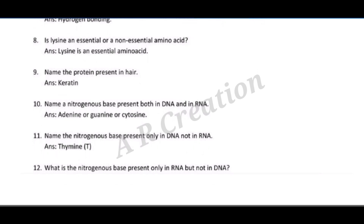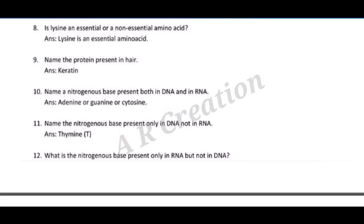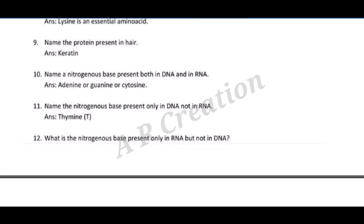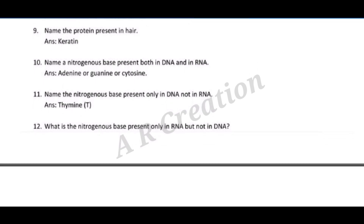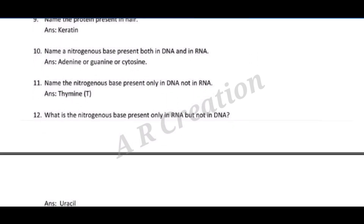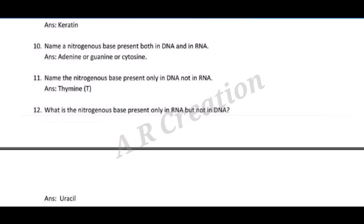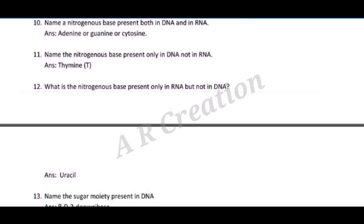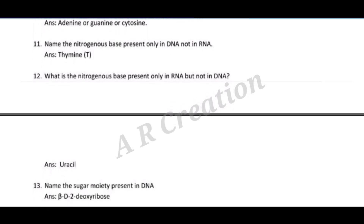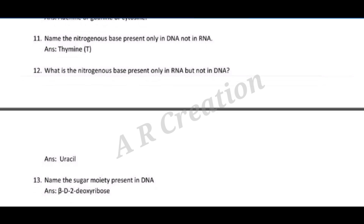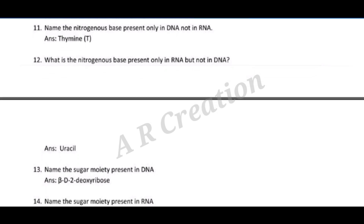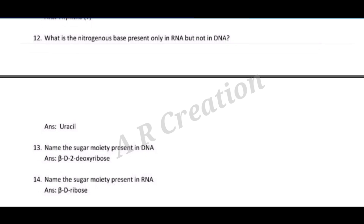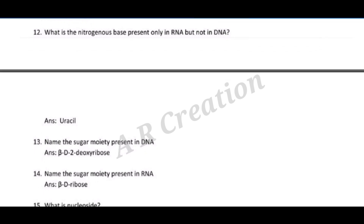Question nine: name the protein present in hair. Answer: keratin. Question ten: name a nitrogenous base present both in DNA and in RNA. Answer: adenine, guanine, or cytosine. Question eleven: name the nitrogenous base present only in DNA, not in RNA. Answer: thymine (T). Question twelve: what is the nitrogenous base present only in RNA but not in DNA? Answer: uracil.